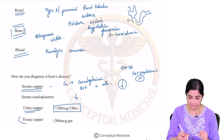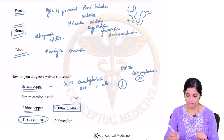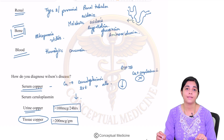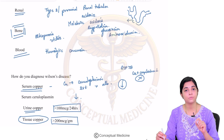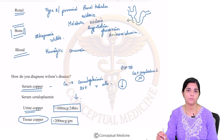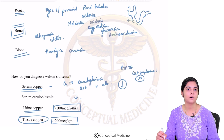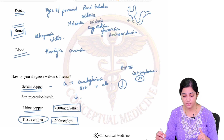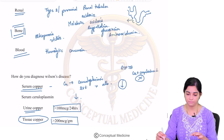You can also detect tissue copper. Tissue copper from the liver — more than 200 micrograms per gram — is diagnostic of Wilson's disease. So the most important diagnostic findings are: serum copper and ceruloplasmin are low, whereas urinary copper excretion is elevated and tissue copper is also elevated.